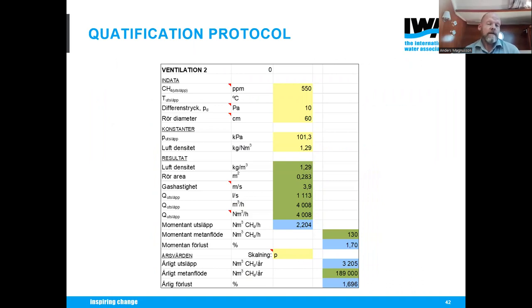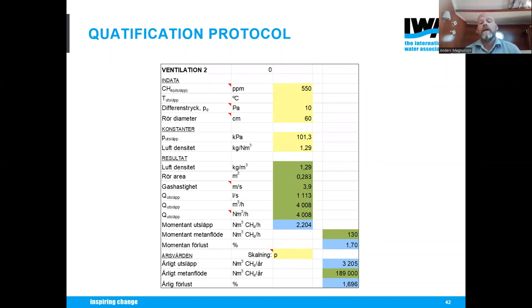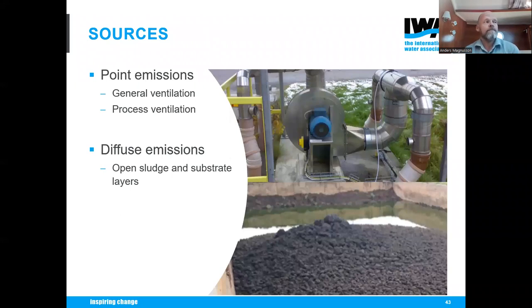This is an example quantification protocol — the numbers are from a facility. The mathematics is fully standardized and all quantification consultants use the same approach. We input the concentration value, differential pressure from the gauge, pipe diameter, and constants, then calculate the amount of methane emitted from that specific source. Combined with the facility's total methane produced over the year, we calculate the methane emission factor as a percentage.